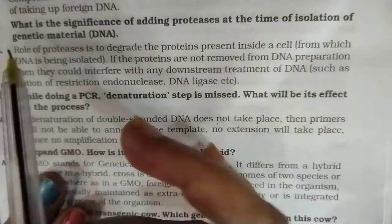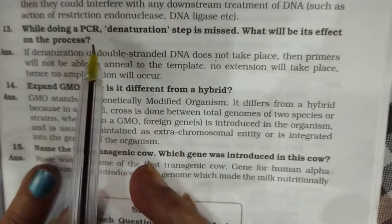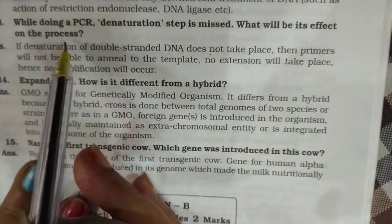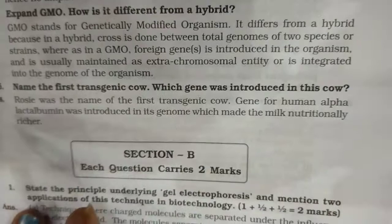Question thirteen: While doing a PCR, the denaturation step is missed — what will be its effect on the process? Question fourteen: Expand GMO and how is it different from a hybrid? Question fifteen: Name the first transgenic cow Rosie — I hope you remember which gene was introduced in this cow.